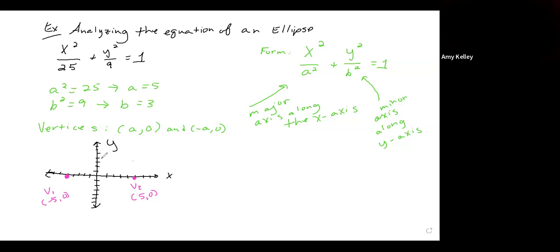Now, b is going to give us the distance we need to travel from the center, the origin 0, 0, along the minor axis up and down. So this means that our points along the minor axis will be 0, 3 and 0, negative 3.